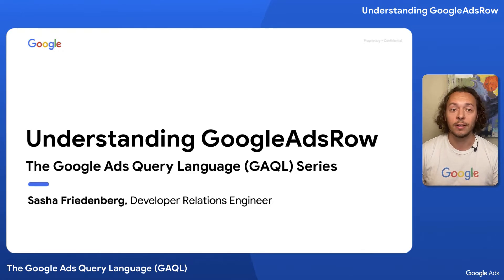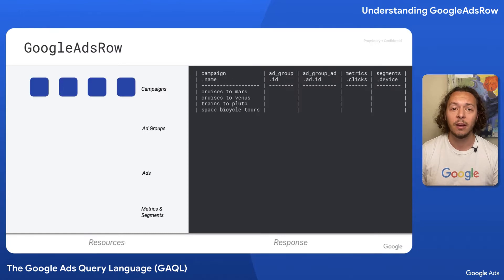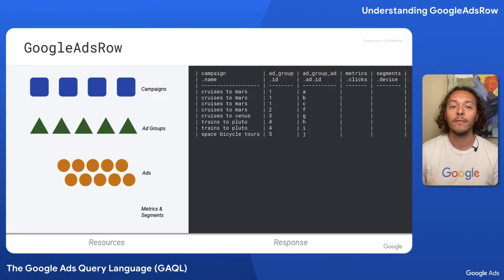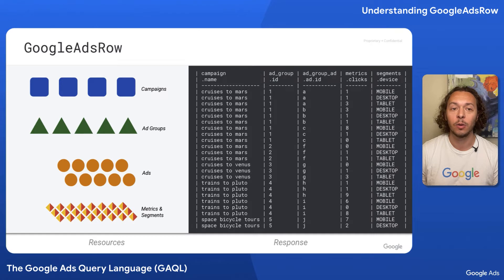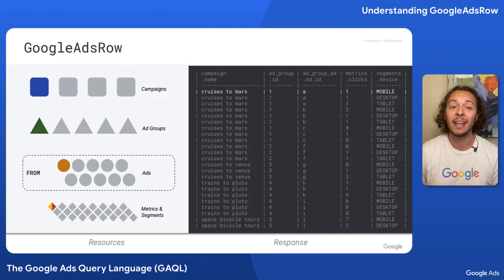So let's illustrate this. Imagine all of the available resources in a given ads account. At the top level, you've got campaigns, and for each campaign you have some distinct ad groups. And same thing for ads within ads. And then we have various metrics and segments that Google Ads collects in buckets for you. Each row in a search stream and search response corresponds to a subgraph of the account's resource tree, determined by the resource in your from clause and any segments specified in your select clause.